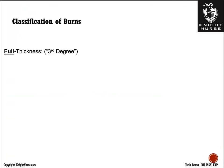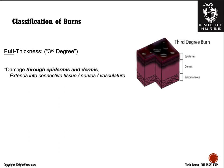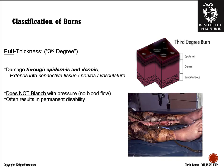The final classification is a full thickness burn, or third degree burn. It's called full thickness because the damage penetrates completely through the epidermis and dermis and extends into connective tissue, the nerves, and the vasculature. It does not blanch with pressure because the burn has destroyed much of the vasculature, and it often results in permanent disability. The patient shown here likely had their pants catch on fire, resulting in circumferential burns, which can cause a tourniquet effect.